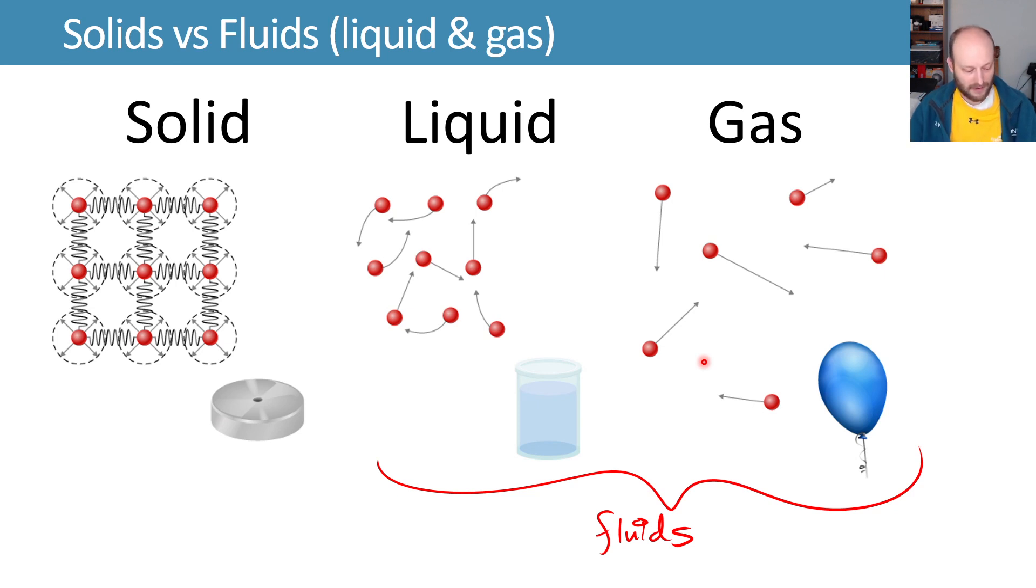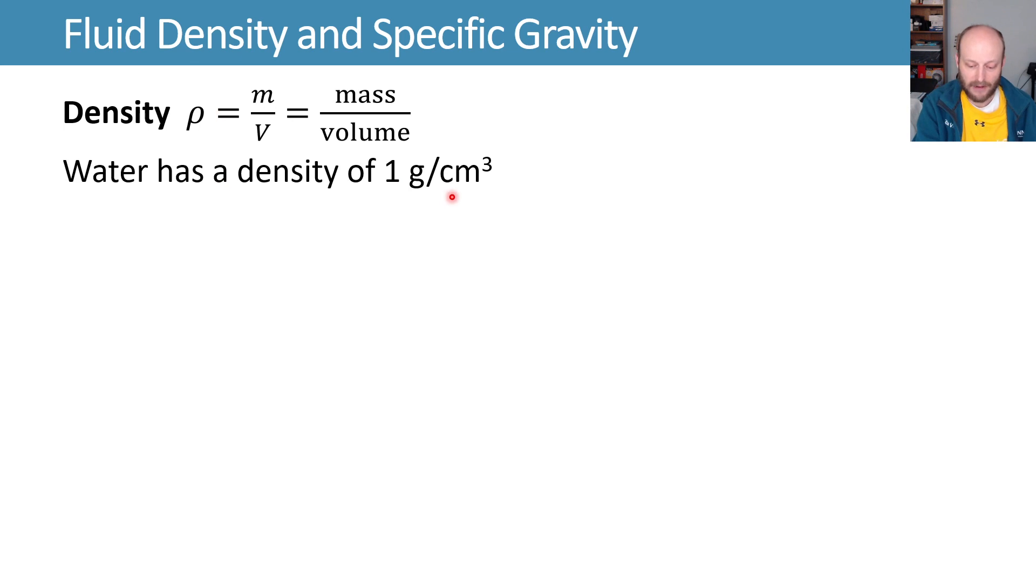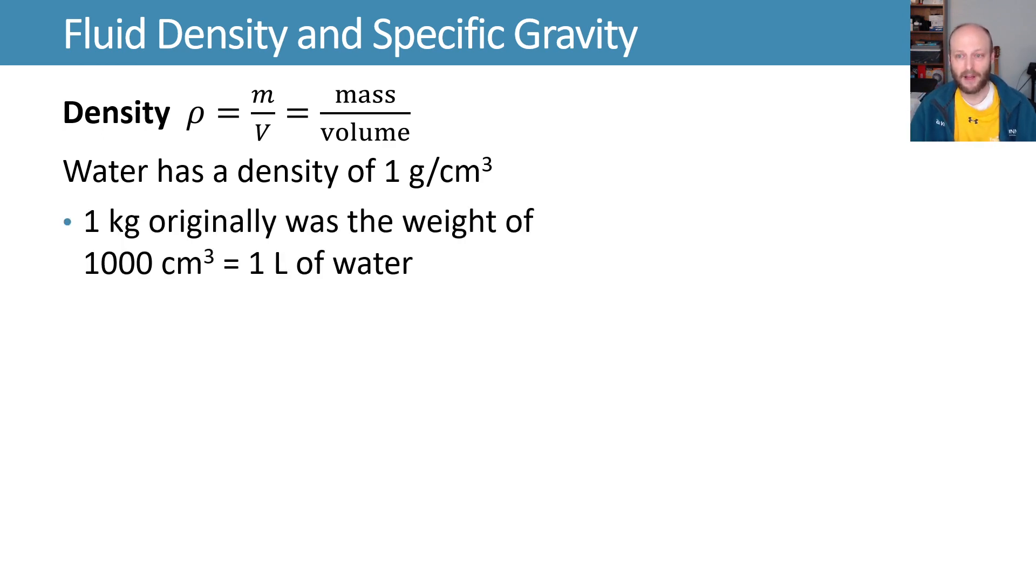Now let's define density and specific gravity. Density is mass over volume. We use the Greek letter rho (ρ), which looks like a little p but different, to talk about density. Water has a density of one gram per cubic centimeter, which seems suspicious. It is suspicious—a kilogram was originally the weight of a thousand cubic centimeters, or a liter worth of water.